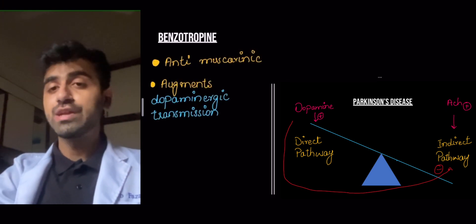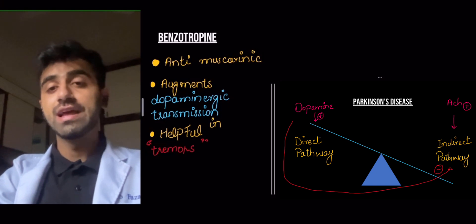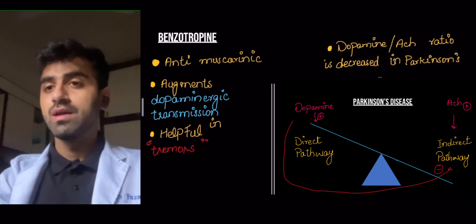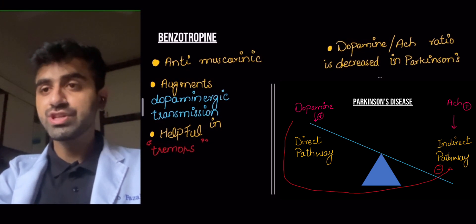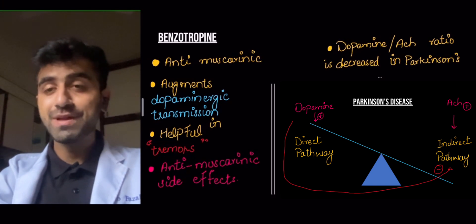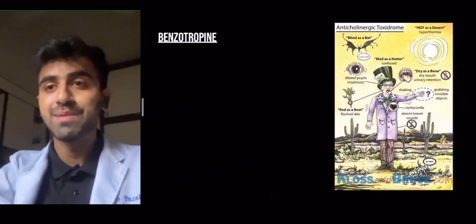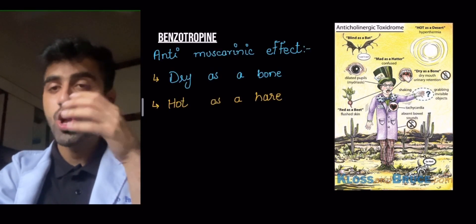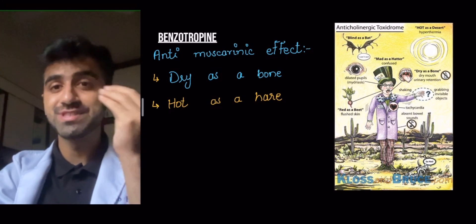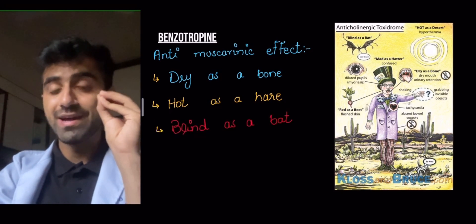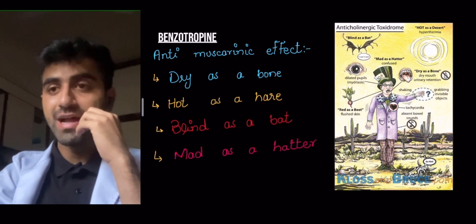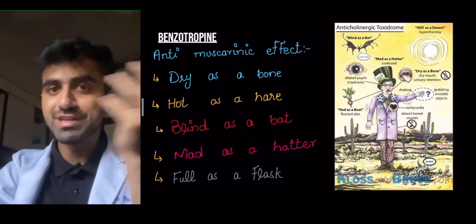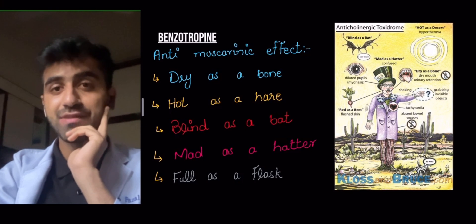Benztropine is an anti-muscarinic that augments dopaminergic transmission in the brain. It's helpful specifically in controlling tremors and jerking movements. Because it is an anti-muscarinic, it has all the classic anti-muscarinic adverse effects: dry as a bone (decreased secretions), hot as a hare (decreased sweating, decreased heat response), blind as a bat (mydriasis), mad as a hatter (confusion), and full as a flask (urinary retention — the bladder is not contracting due to decreased parasympathetic activity).